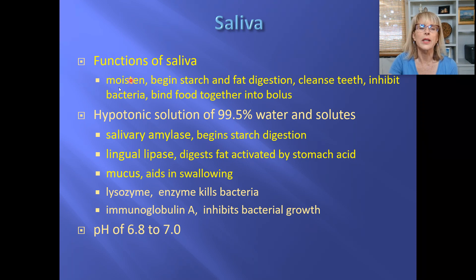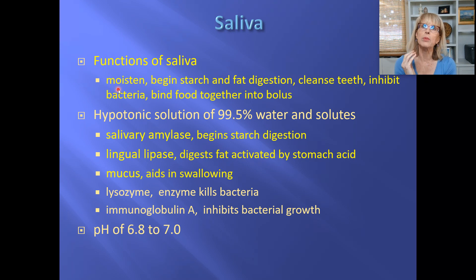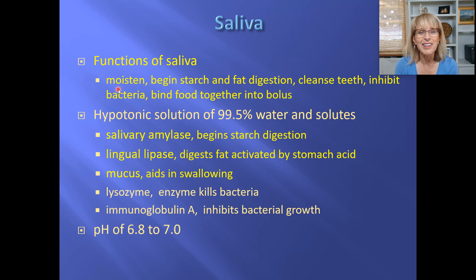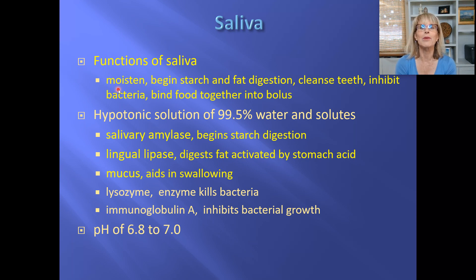Saliva also moistens the food that we eat and applies a smooth coat to the food we're about to swallow so it's easy to swallow. The next time you're chewing, you might take a moment to appreciate the complicated work that your tongue is doing.